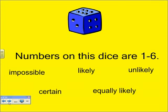The probability of rolling a number less than one is impossible, because there are no numbers on this dice less than one. The probability of rolling a number more than five is unlikely. There is one number more than five and that is the number six. So our chances are one out of six that we would roll a number more than five. So that means it is unlikely, not impossible, but unlikely that we would roll a six or a number more than five.